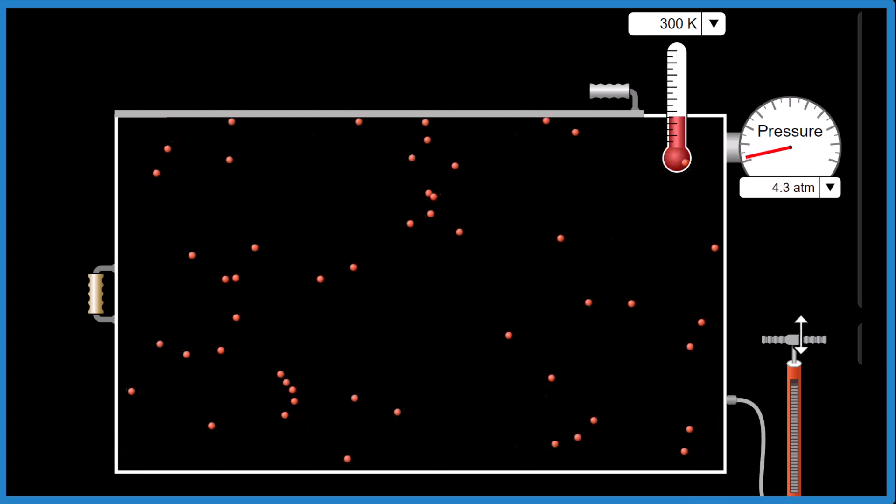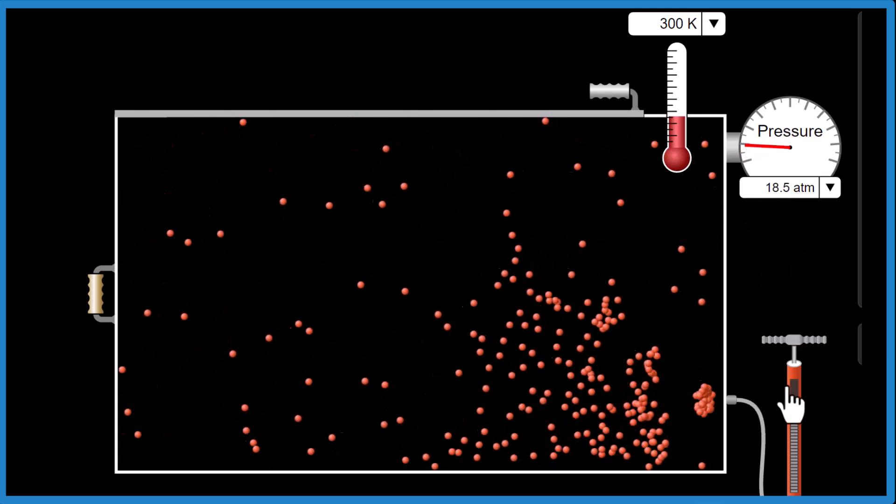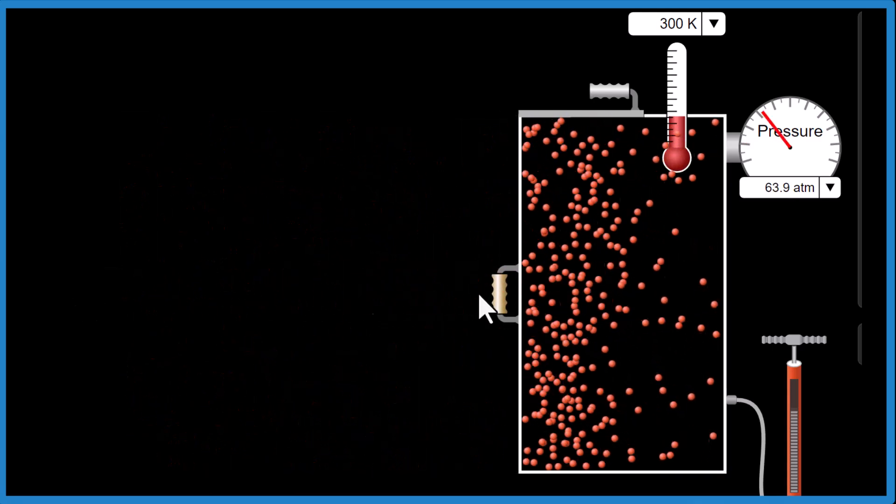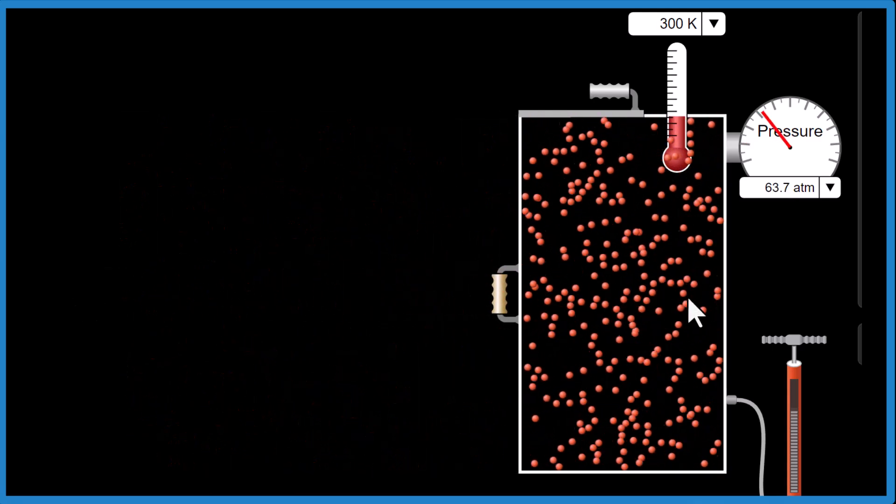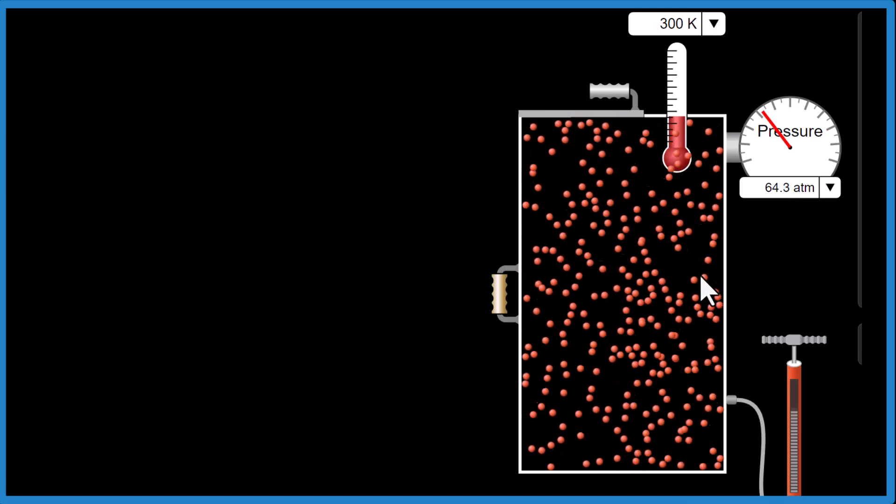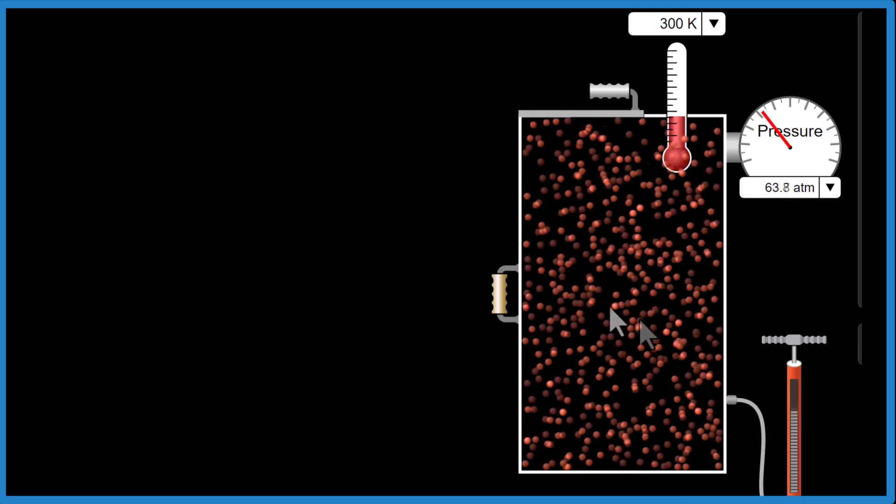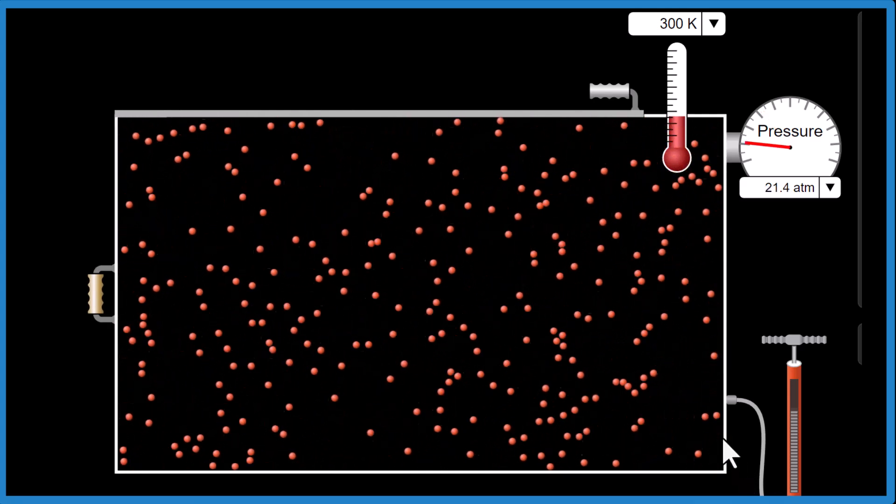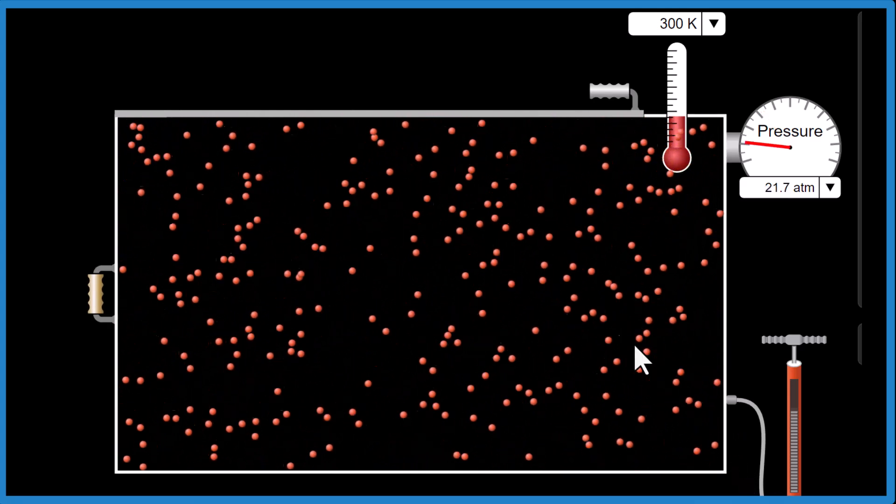But if we had more molecules, or we reduced the volume, now it starts to matter, because they're taking up a lot of space in relationship to the entire volume. So under low pressures, where they're spread out more, we have more of an ideal situation.